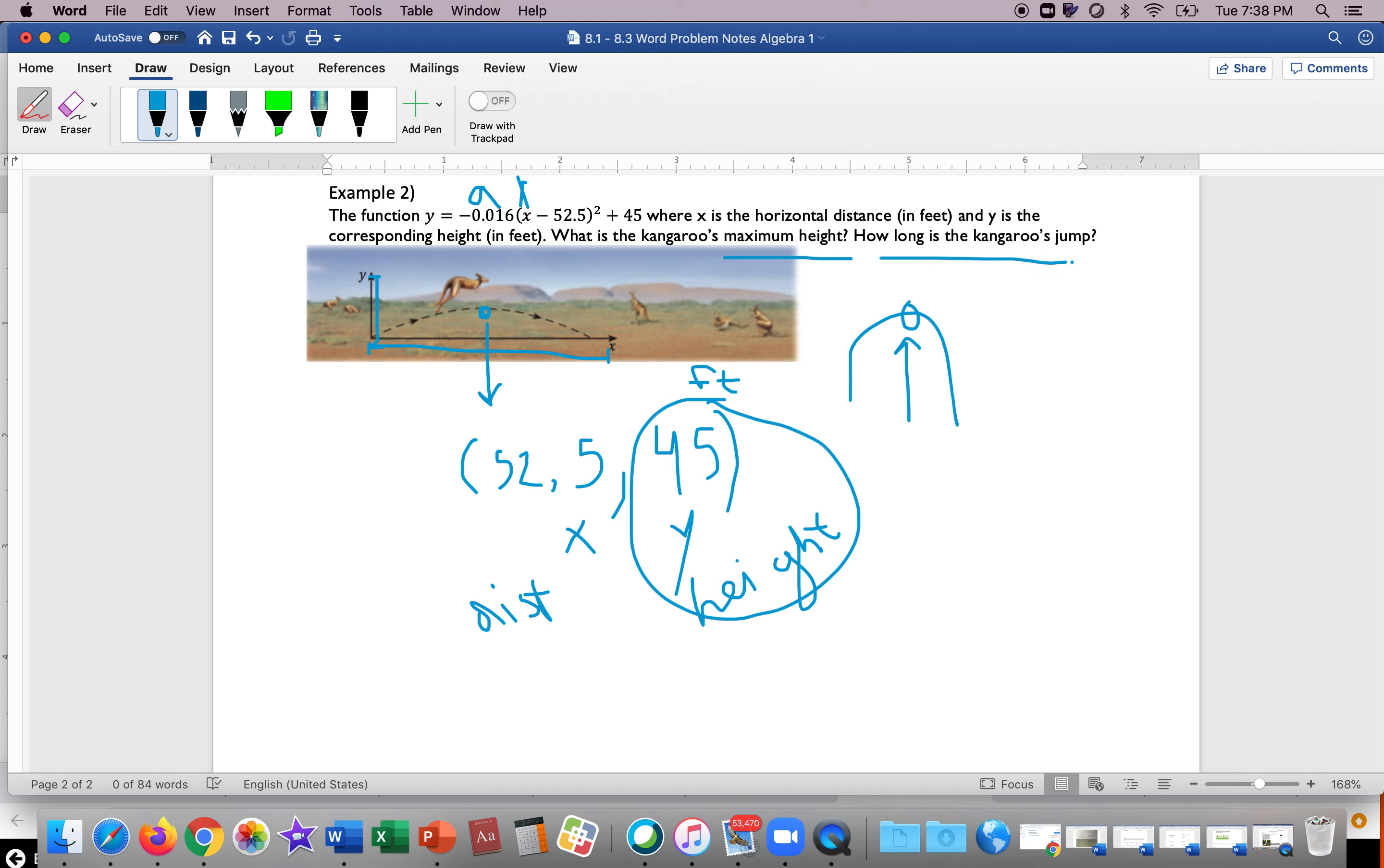So the kangaroo jumped 45, and the units are feet. How long is the kangaroo's jump? Now we have to be careful. The kangaroo's jump, although 52.5 does represent x, 52.5 represents the halfway point, right? Because the halfway is where you will find the axis of symmetry, the vertex.